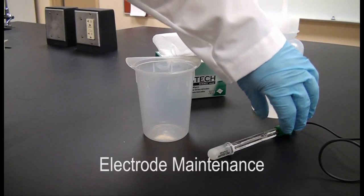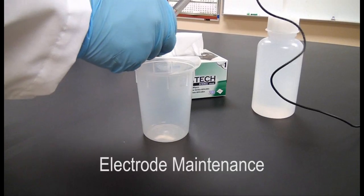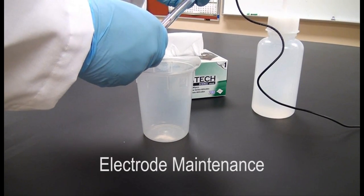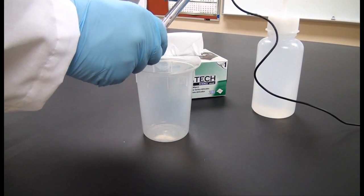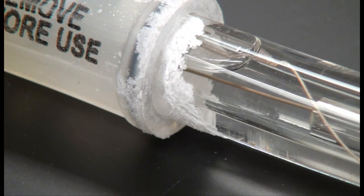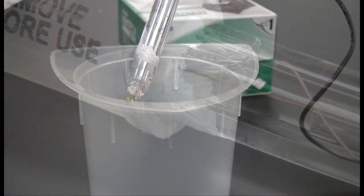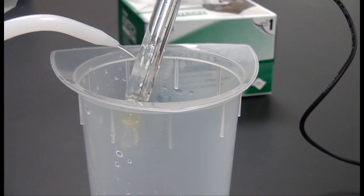Electrode maintenance. Always make sure the electrode is stored in an appropriate storage solution and never allow the electrode to dry out. For maximum accuracy, any filling solution that has encrusted the outside of the electrode should be removed with DI water.